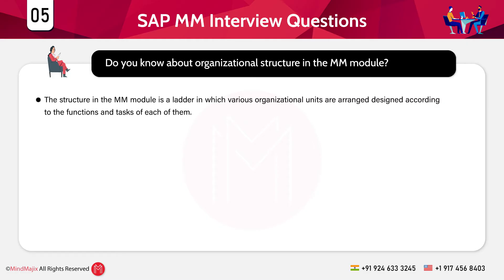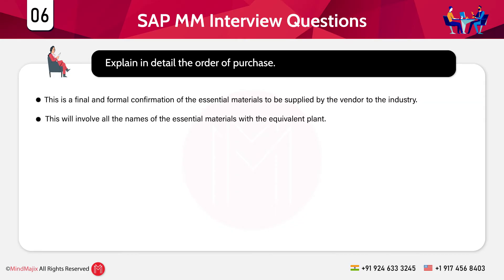Further organizational units include: storage location, where produced groups are kept; warehouse number, which represents the warehouse system and differs for every storage area; storage type, which describes different areas such as the issuing area and goods picking area; purchasing organization, the unit that negotiates purchasing and obtains services and materials; and purchasing group, a code for an individual buyer or group who purchases materials and partially involves in negotiating and obtaining goods.